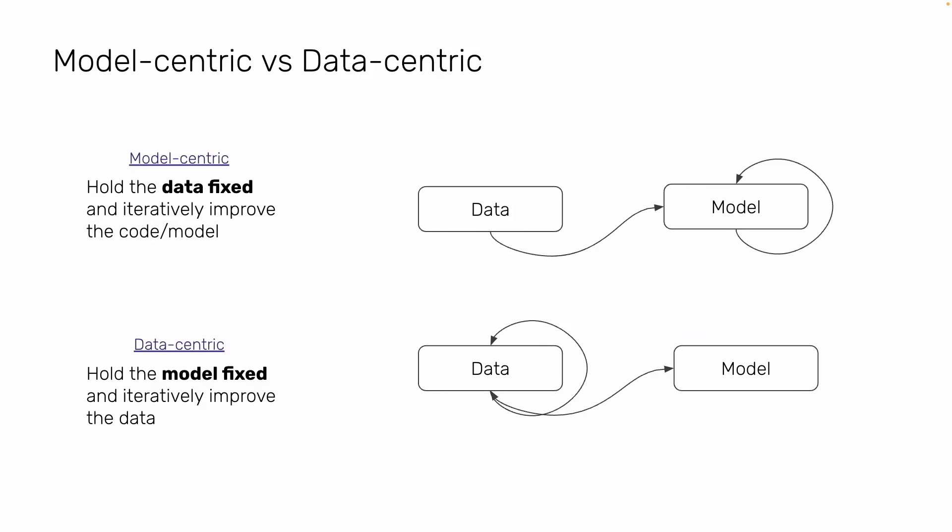There are two approaches: model-centric and data-centric. Model-centric means you fix the data and iteratively improve your code or model by tuning parameters to improve performance. Data-centric means you hold the model fixed and keep iteratively improving the data. A lot of work in industry is model-centric, but only a few focus on data-centric. I suggest focusing more on data-centric — keep the model stable but focus on the data. This is also advocated by Andrew Ng, who discussed this in a webinar — something we really experience in day-to-day life as data scientists.